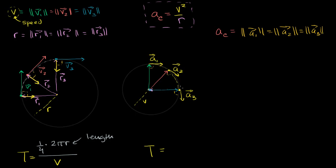Now think about the length of the arc on the velocity vector circle in the purely geometrical sense. The radius of that circle is v, so the length of that arc is one fourth times the circumference of this circle, which is 2π times v. What is nudging it along this arc? Just as speed — the magnitude of the velocity vector — nudges along the position path, what nudges along the velocity path is the magnitude of the acceleration vector, which is a sub c. And these times are the exact same: the time for the position vector to travel corresponds to the time for the velocity vector to travel.